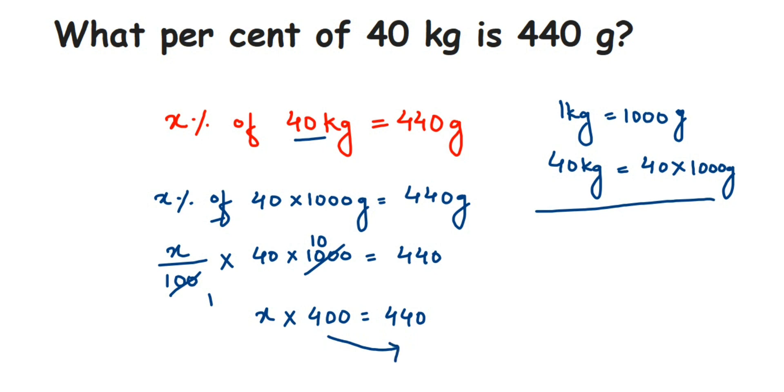X is equal to 440 divided by 400. Now you can cancel this in the 4 table, or you can cancel this in the 10 table. I'm going to cancel the zeros, so 0 and 0 will get cancelled. Now I'm going to cancel directly in the 4 table. 4 tens are 40, 4 elevens are 44. Now we got here 11 upon 10. So X is equal to 11 upon 10.